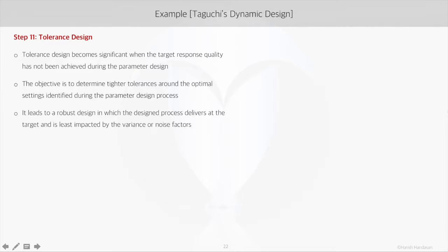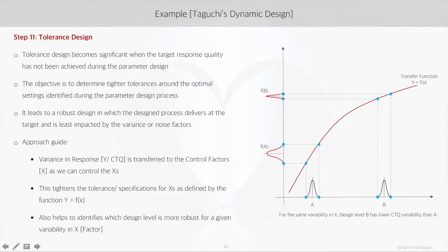How is this achieved? Since the target response quality is not achieved, we transfer the variance in response to the control factors, or x's, as it is easier to manage or control the x's. The relation of y with x is defined by the transfer function. When we transfer the variance to x's with a view to control them, we end up creating tighter tolerances or specifications for x's.